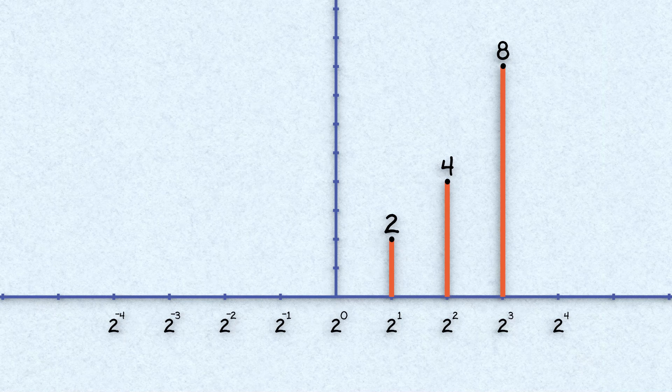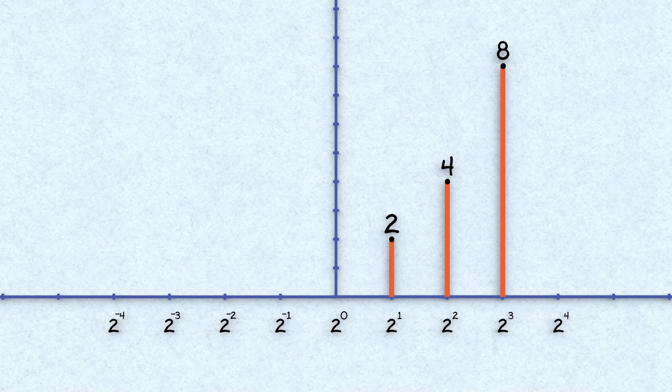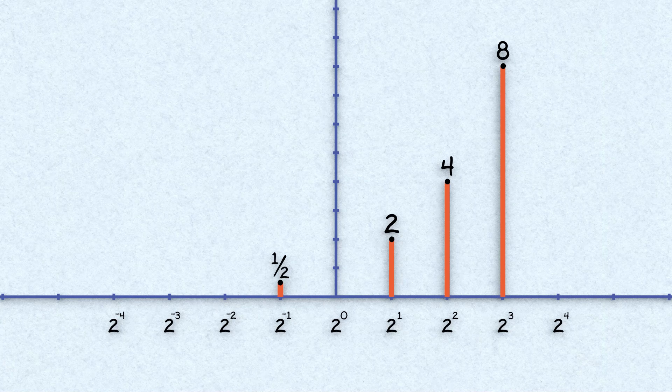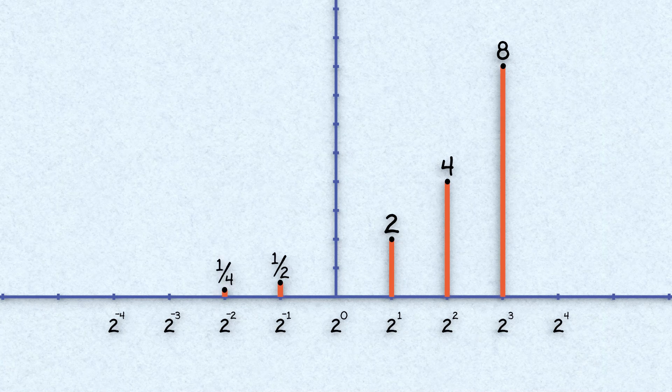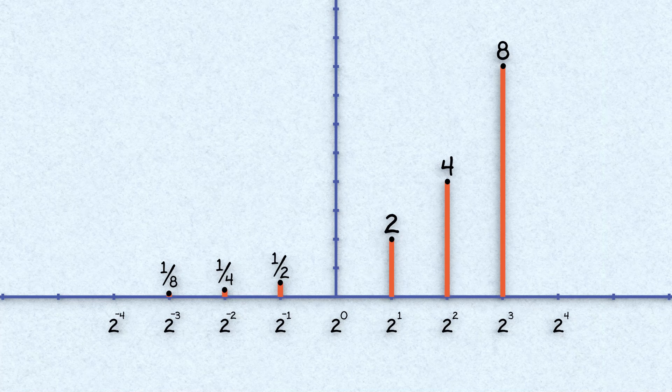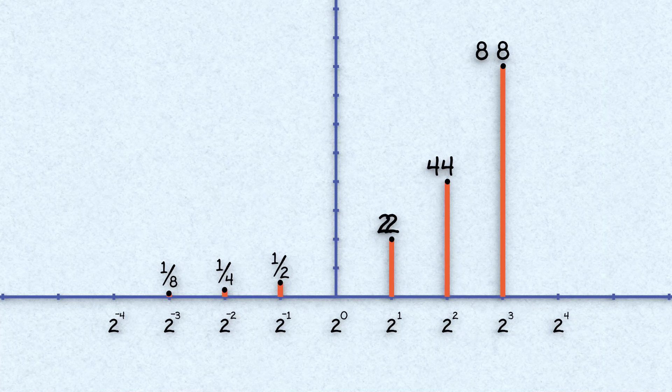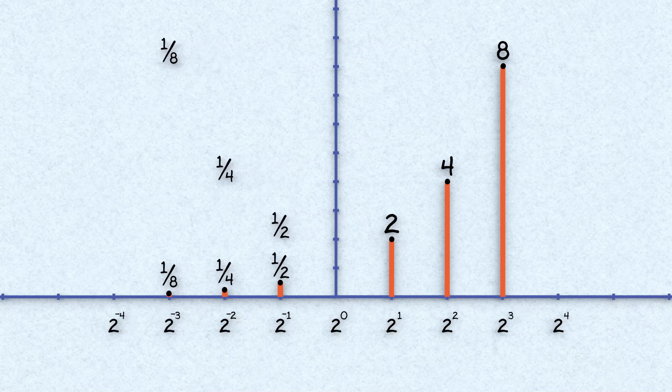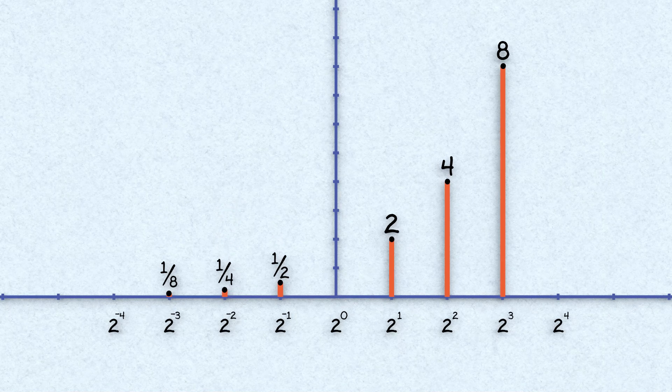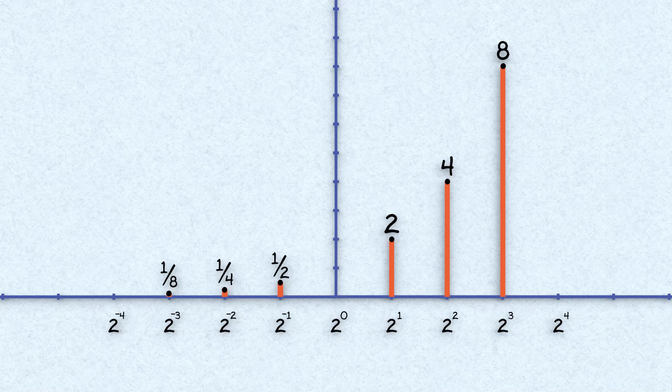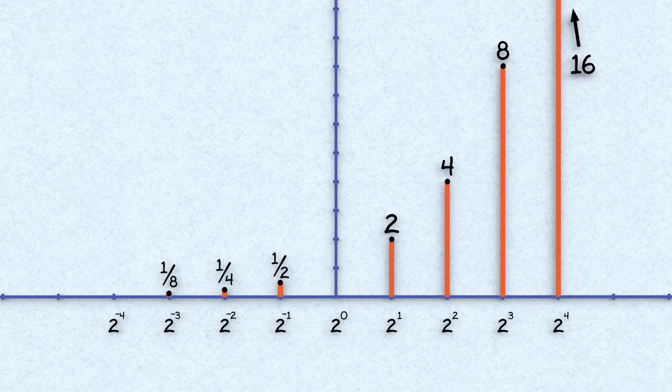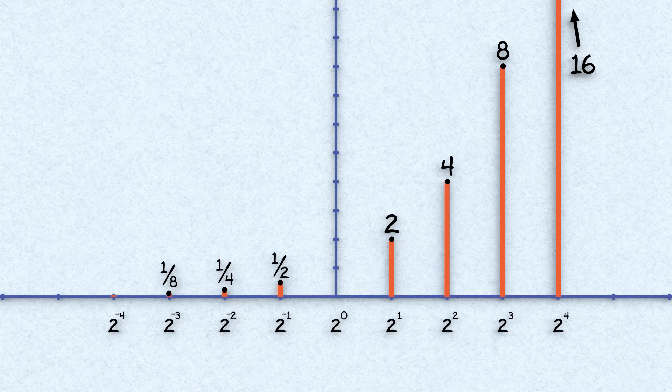With negative exponents, two to the power of negative one means we divide by two once, which gives us one half. Two to the power of negative two means we divide by two twice, which is one fourth. And two to the power of negative three, we divide by two once more and get one eighth. Essentially, the value of a number with a positive exponent gets swapped into a fraction under the value of one if it switches to a negative exponent. The negative exponent values give us the reciprocals of the positive exponent values, meaning it becomes a fraction under one. Two to the power of four is 16, while two to the power of negative four is one sixteenth.